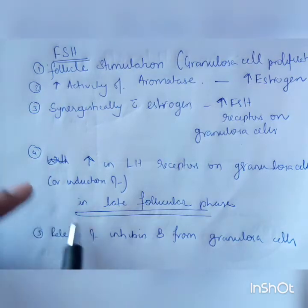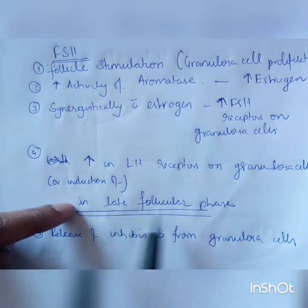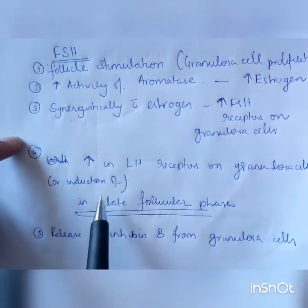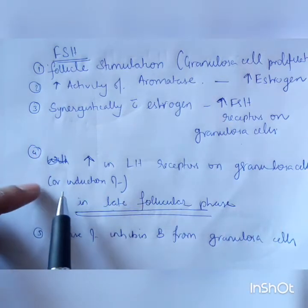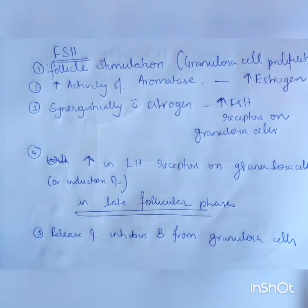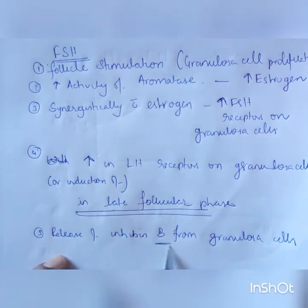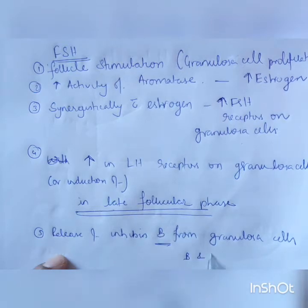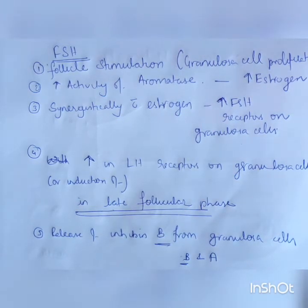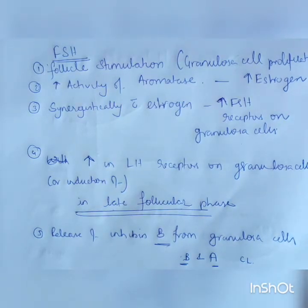By the end of the follicular phase — in the late follicular phase — FSH increases LH receptors on granulosa cells, inducing these LH receptors. FSH also causes release of inhibin B. Inhibins are of two forms: B and A. Remember, B comes before — B is secreted by granulosa cells and A is secreted by the corpus luteum.